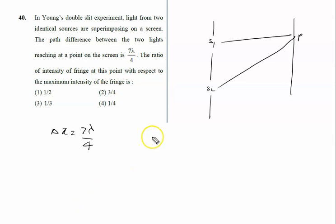We all know very well, I is given by I0 cos squared theta by 2. We have to calculate I by I0, it is given by cos squared theta by 2.